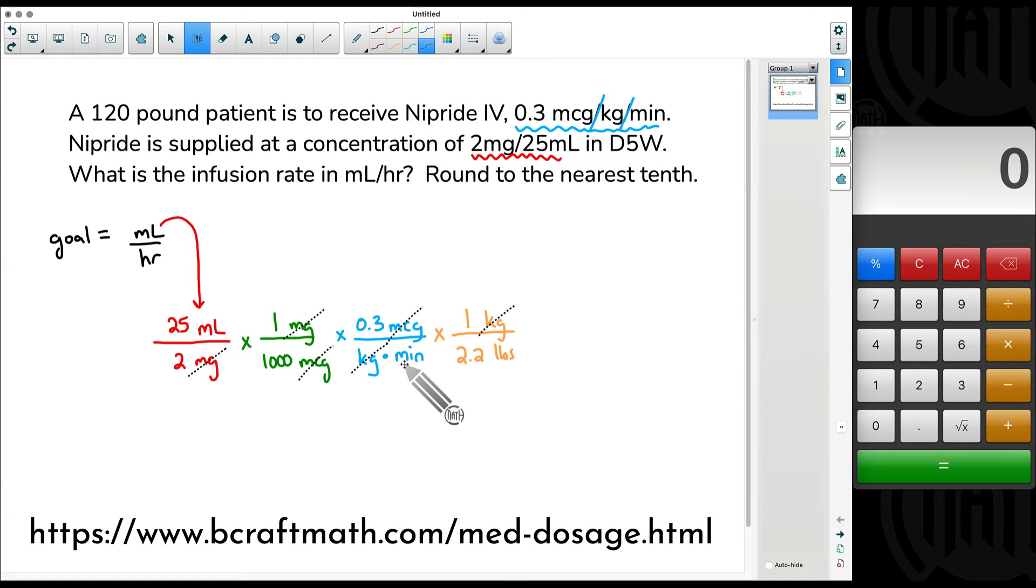We still have minutes at the bottom. We have pounds at the bottom. Well, why did we do this conversion with pounds at the bottom? We can tie in the 120 pound patient. Let's put the 120 pounds at the top. I'm going to put this over 1 and I'll explain why right here in a second. But why did I put the 120 pounds at the top? The pounds at the top cancels out with the pounds at the bottom.